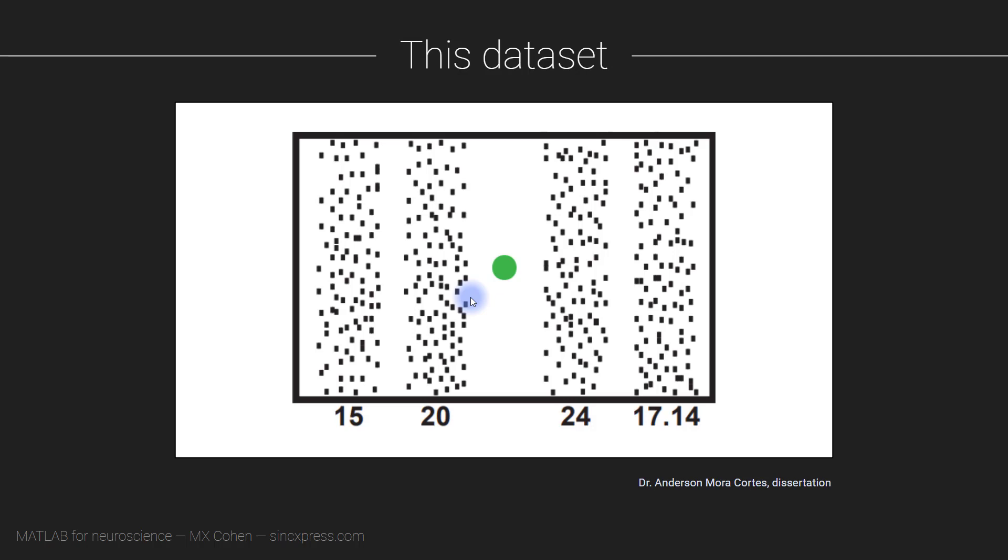These are EEG data collected during an SSVEP experiment that was done by a PhD student in my lab. So in this experiment, the research participant was looking at a dot in the center of a computer screen, and there were four columns of smaller dots. And each of these columns or each of these dots were all flickering at different rates.